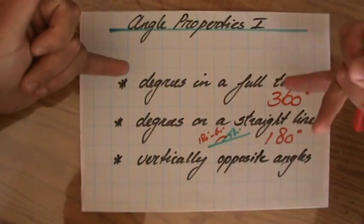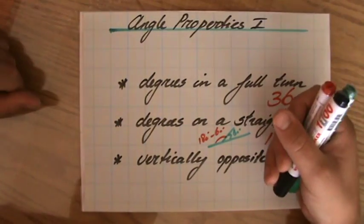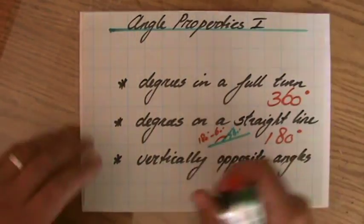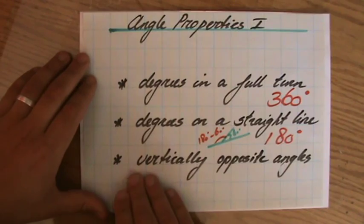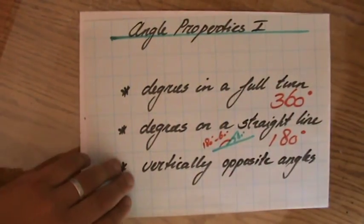In my previous video I spoke about degrees in the full turn and degrees in the straight line and I gave you some background information and I didn't have time to do vertically opposite angles.